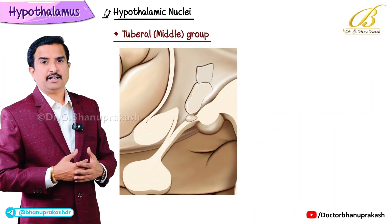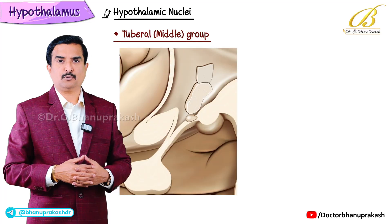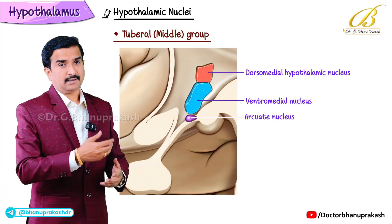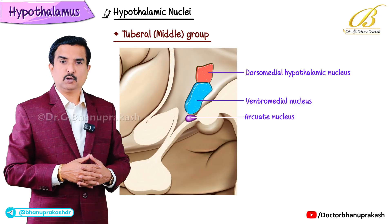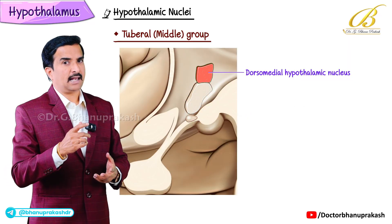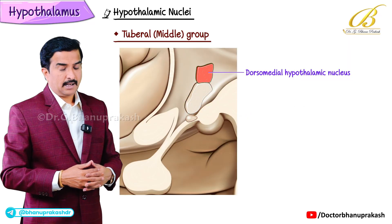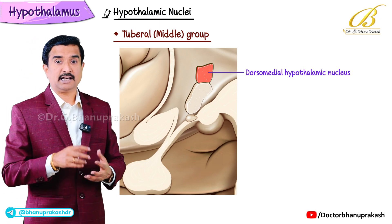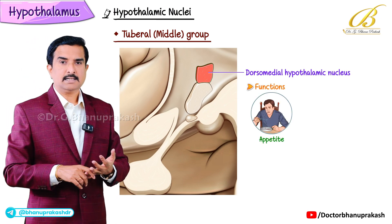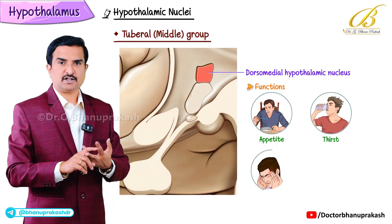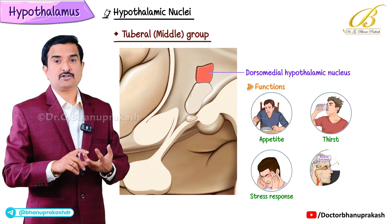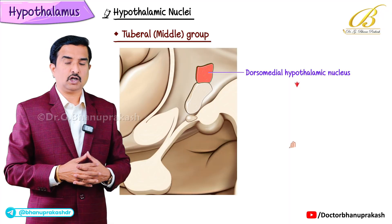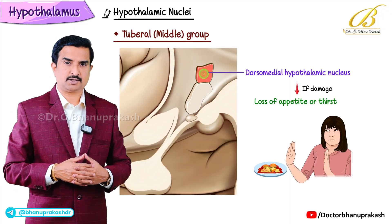After the anterior group, let's move on to the second group called the tuberal group, also called the middle group. The nuclei include the dorsomedial hypothalamic nucleus, which regulates appetite, thirst, stress response, and circadian rhythm. Injury to this nucleus may result in loss of appetite or thirst.